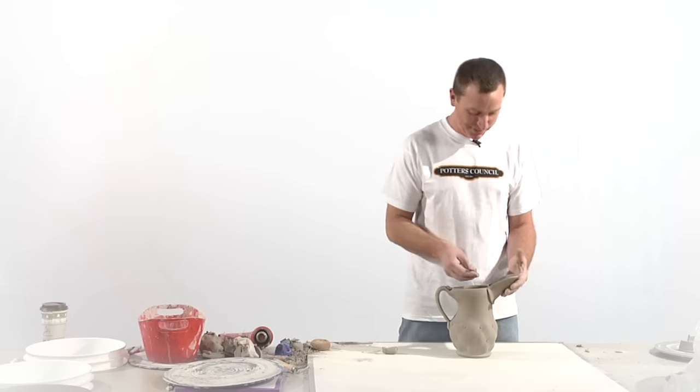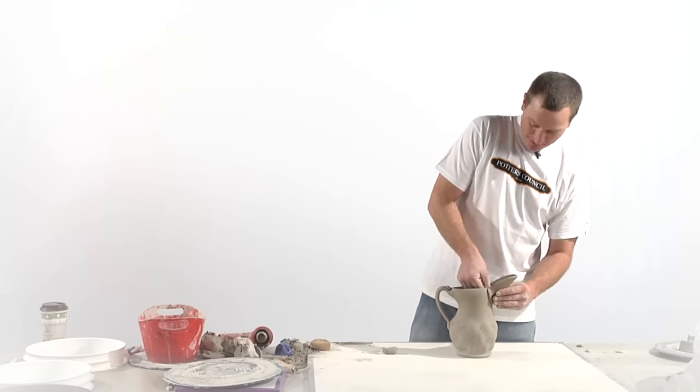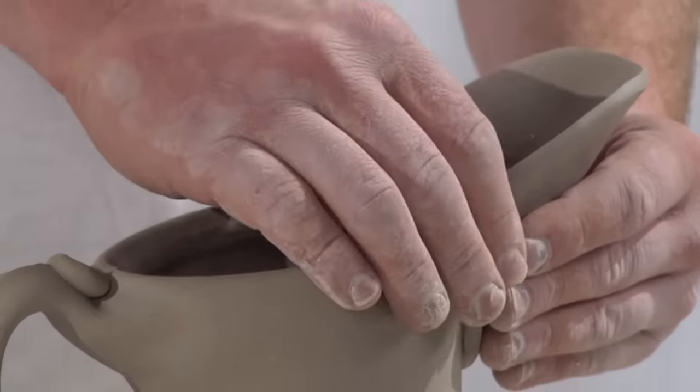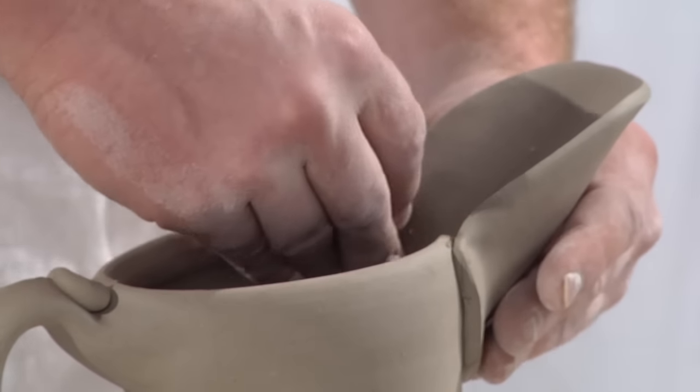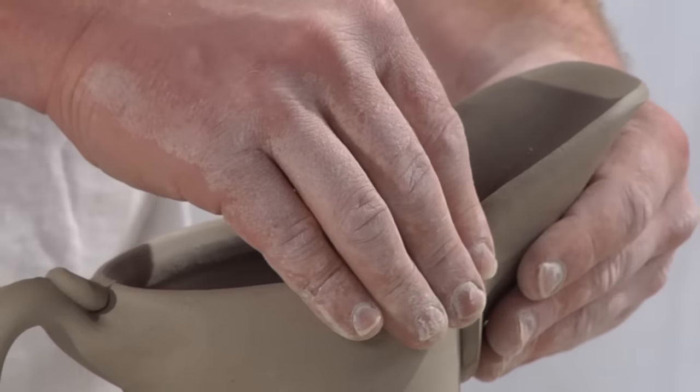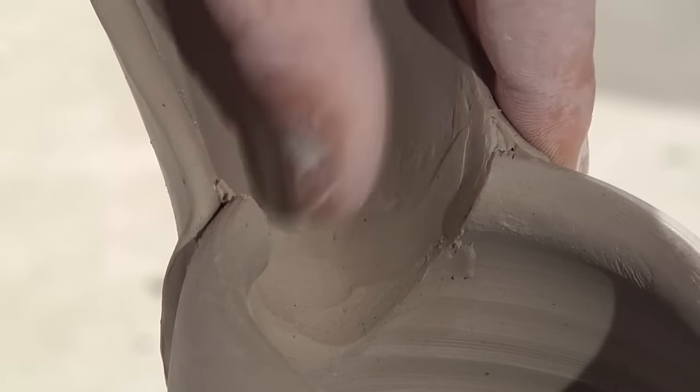The final step on the pitcher is to take a coil and put it on the inside of the piece to where it spans the gap between the body of the form and the slab spout.